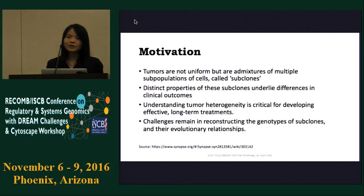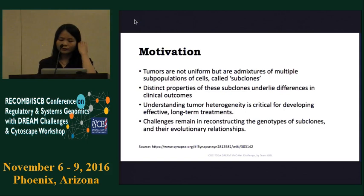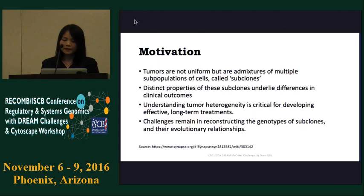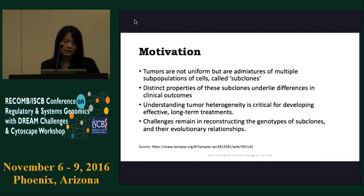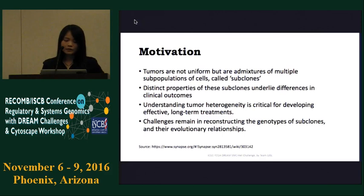As Paul just mentioned, tumors are not uniform, but consist of different types of cells, ranging from the normal tissue microenvironment, infiltrating immune cells, and cancer cells. In terms of the cancer cells, they are also very heterogeneous and are admixtures of multiple subpopulations of cells, also called subclones, driven by distinct sets of genomic variants. Studies have shown that distinct properties of these subclones underlie differences in clinical outcomes. For example, some cells will grow faster and metastasize more frequently than others. Therefore, understanding tumor heterogeneity is very critical for us to develop more effective and long-term cancer treatments.